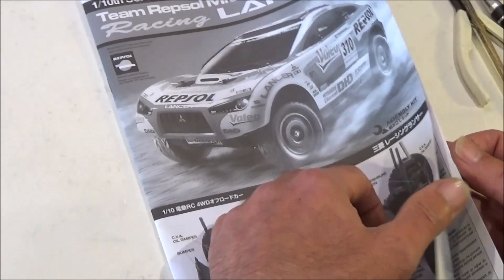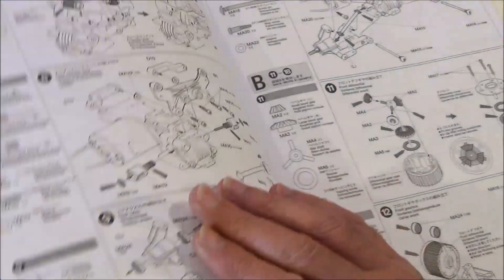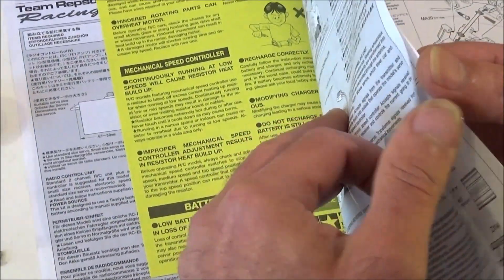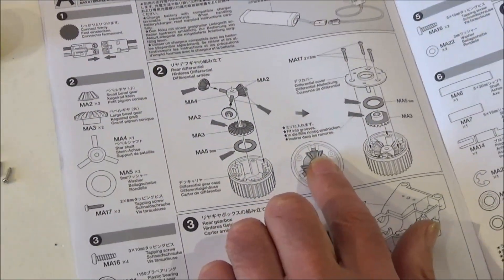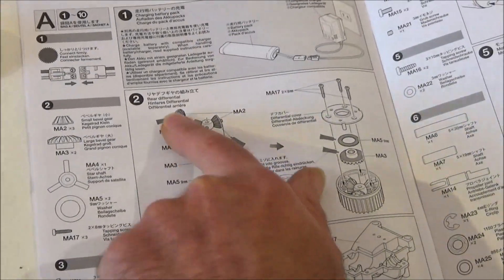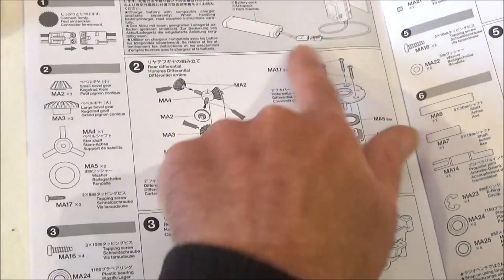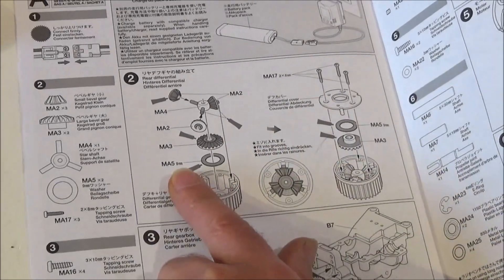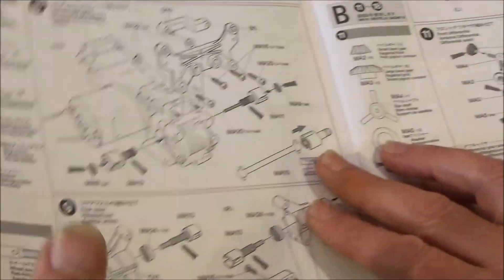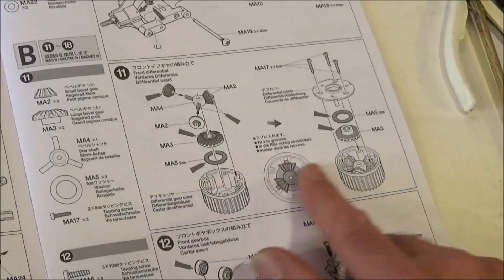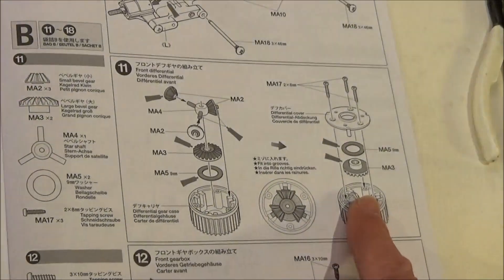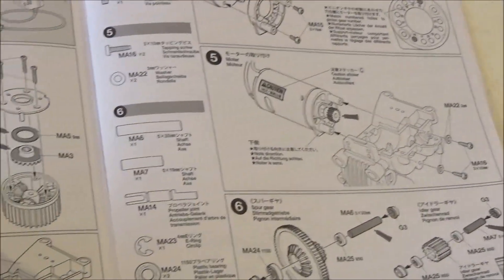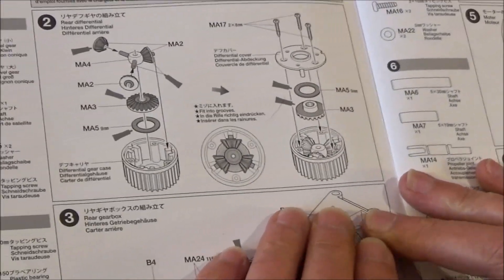So here we go. First thing we're going to do is build the differential. It says build the rear differential first, step two. We're not doing step one, that's just charging the battery. But when we look at step 11, it's exactly the same. I've decided I'm going to build both the differentials at the same time, get those out of the way.